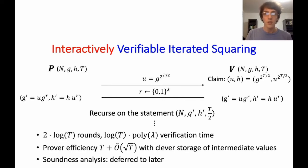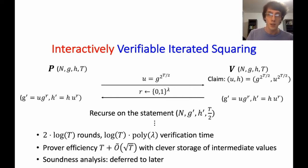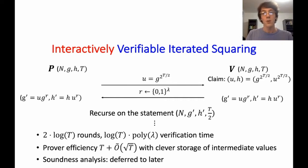After log depth of this recursion, we get to a trivial statement the verifier can check on its own. The protocol is very efficient: the prover does very little work beyond computing the answer, and the verifier works in time polylog(t) times the size of the group. Pietrzak noted that this interactive protocol can at least heuristically be made non-interactive using a random oracle by applying Fiat-Shamir.